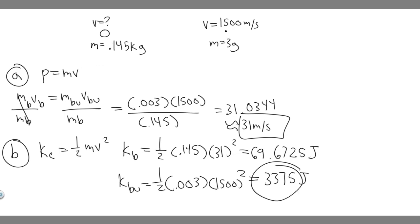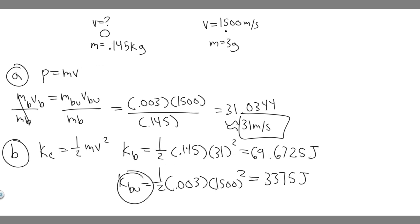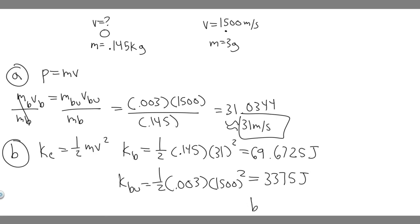We can tell the bullet's kinetic energy is way bigger. So the bullet has greater kinetic energy — that's your answer to Part B. To recap: the answer to Part A is 31 meters per second, and the answer to Part B is the bullet, because it's 3,375 joules versus about 70 joules.